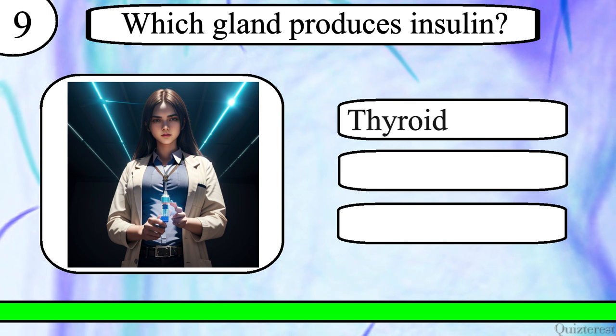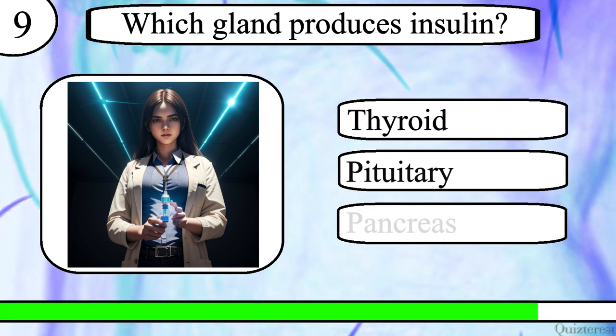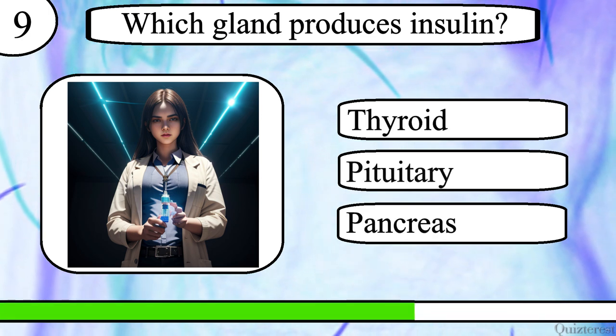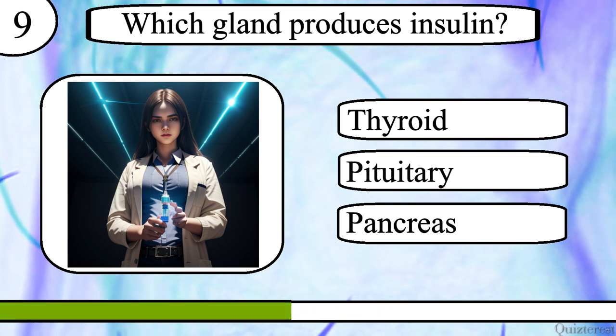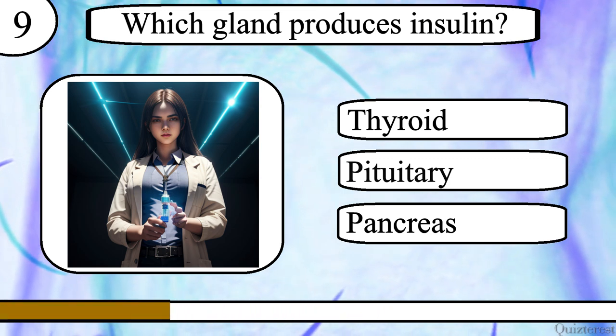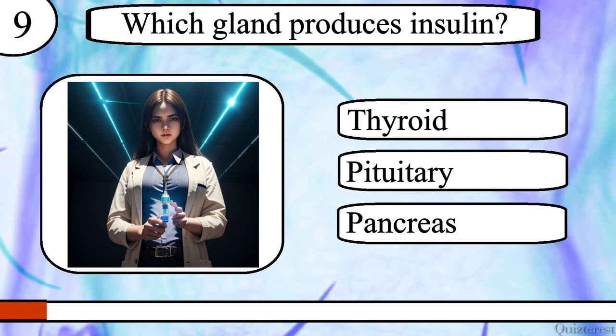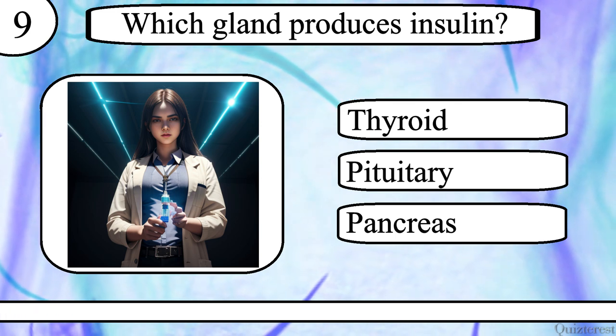Question 9. Which gland produces insulin? Thyroid, pituitary or pancreas? The correct answer is pancreas.